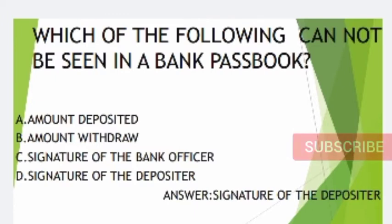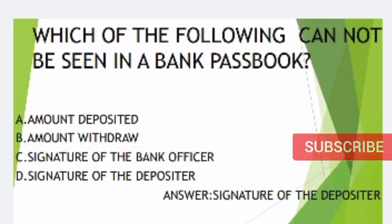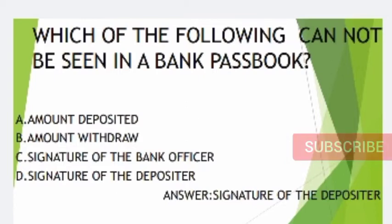If you have no idea of the options, this is the question of options. Option A: Amount Deposited. Option B: Amount Withdrawal. Option C: Signature of the bank officer. Option D: Signature of the depositor.